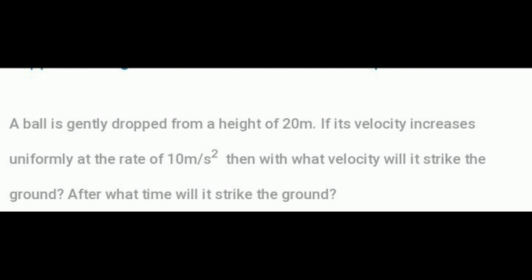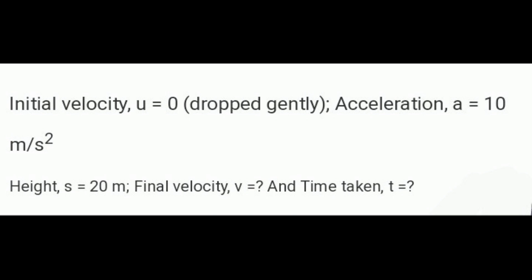Next problem: A ball is gently dropped from a height of 20 m. If its velocity increases uniformly at the rate of 10 m/s², with what velocity will it strike the ground? After what time will it strike the ground? Solution: Initial velocity u = 0 (dropped gently), acceleration a = 10 m/s², height s = 20 m. Find: velocity v = ? and time t = ?.